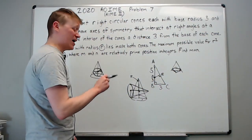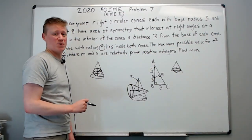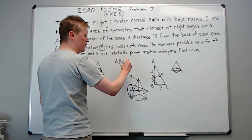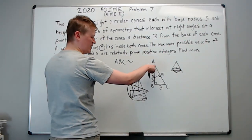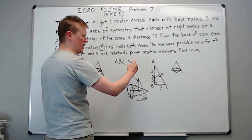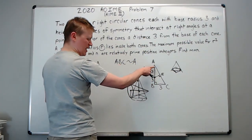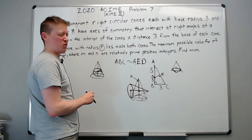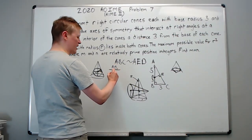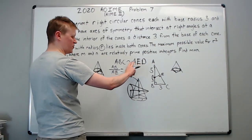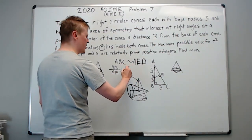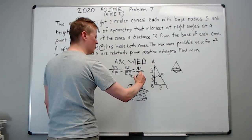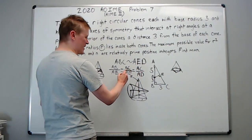I like to make a similarity statement. Triangle ABC needs to be similar to — in both triangles, A is in both, so A stays in the same position. B is a 90-degree angle, and E is a 90-degree angle, so E goes second, and D goes last. So triangle ABC is similar to triangle AED. Now we make proportional statements: AB over AE equals BC over ED, equals AC over AD. What are we looking for? We're looking for DE.